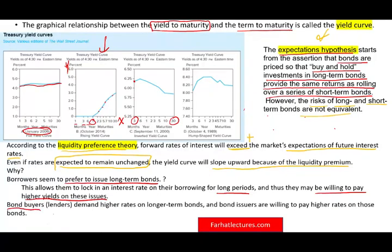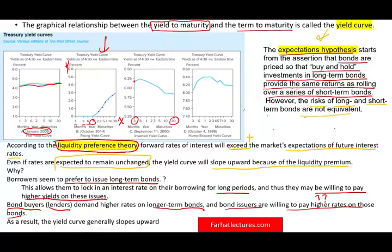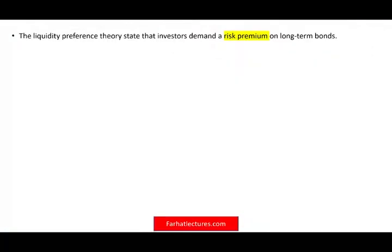The bond buyers — the lenders — are going to demand a higher rate on longer-term bonds because the bond issuers are willing to pay higher rates for those bonds. Why are they willing to pay a higher rate? Because they want to lock in. They want that peace of mind. If they want that peace of mind, as the lender I'm going to make them pay a premium for that. This is the idea behind the liquidity preference premium. If you want to borrow long term, pay me a premium and I will give you that peace of mind. That extra premium yields a curve that's generally upward sloping.